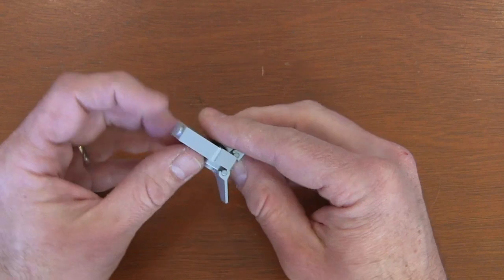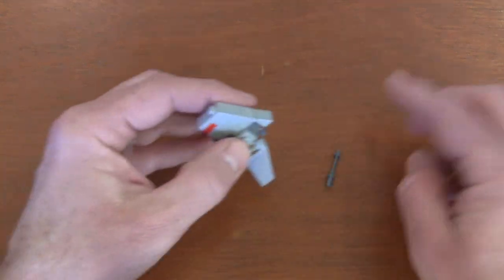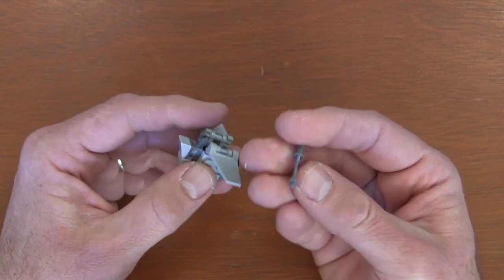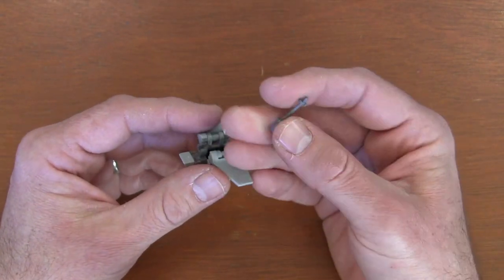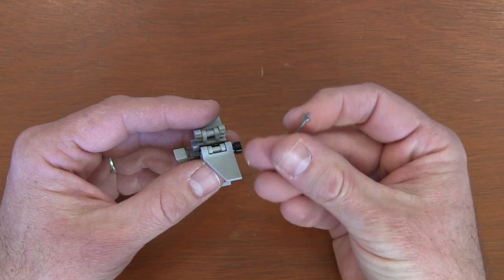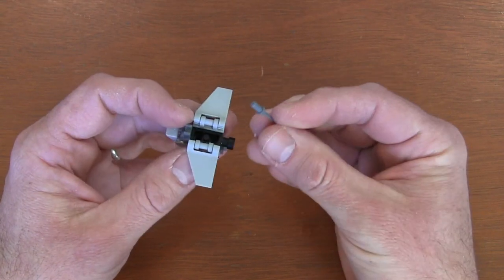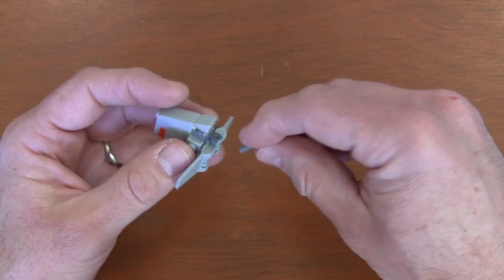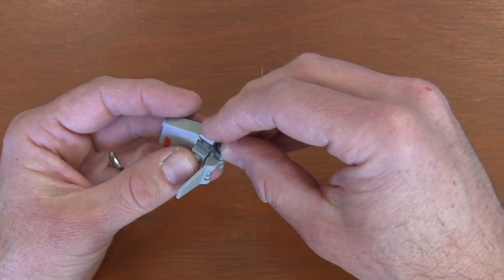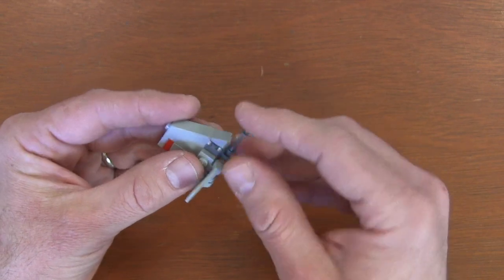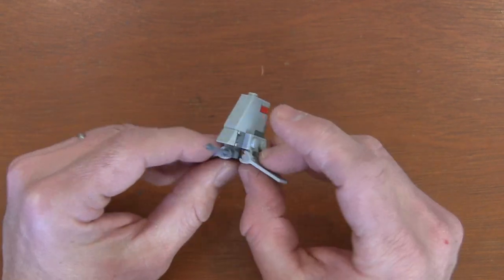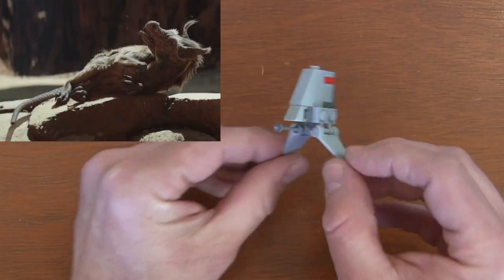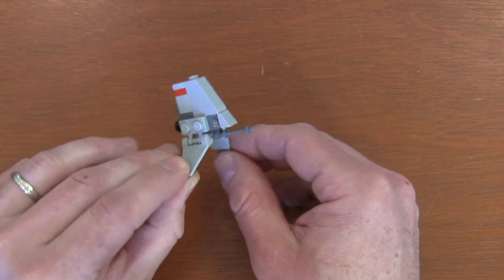Now all I need is the lower cannons, because what is the point of having a T-16 Skyhopper if you're not going to shoot some Womp Rats? To create that bottom cannon to shoot your Womp Rats, I'm going to grab this minifigure ski pole. Just where the minifigure would grab the ski pole, I'm going to put that into the clip that I put on the beginning facing down and have the ski pole facing forward as if it's the front cannons to my Skyhopper. So here we have Luke Skywalker able to shoot some Womp Rats back home before he goes off to fight the Empire.